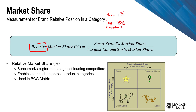Relative market share is important because it benchmarks your performance against your current leading competitors, allowing you to detect who they are and how you are positioned against them. It also enables comparison across product categories — for example, comparing the automotive industry to the operating system market. Lastly, it is used in what we call the BCG matrix, a framework visible on this slide.